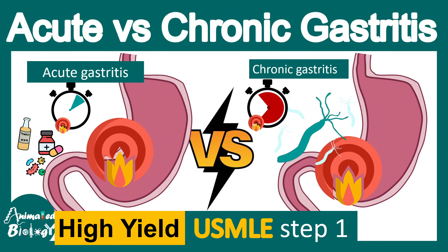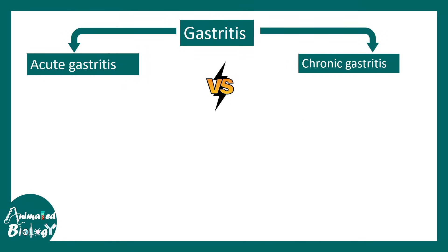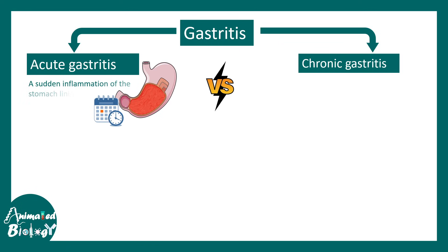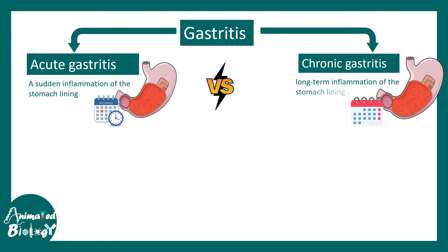In this video we'll be talking about acute versus chronic gastritis, a high-yield topic for USMLE Step 1. Acute gastritis refers to a sudden inflammation of the stomach lining which can range over a few days, while in chronic gastritis there is long-term inflammation of the stomach lining.